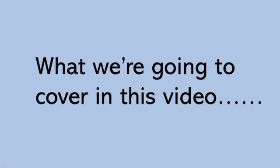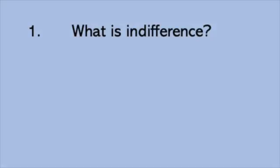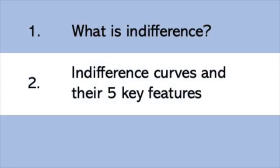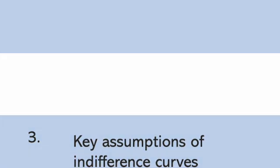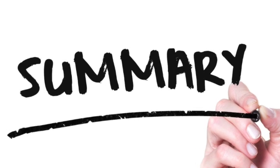So in this video we're going to cover the following. Firstly, we'll look at the concept or idea of indifference. What does it mean to be indifferent? What do economists mean by indifference? Secondly, we'll use a practical example to plot a simple indifference curve and discuss the five key features of indifference curves that you need to remember. Thirdly, we'll look at four key assumptions that underlie all indifference curves. And finally, at the end we'll have a quick summary of everything we've covered.